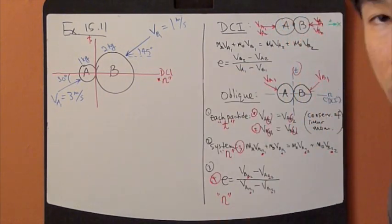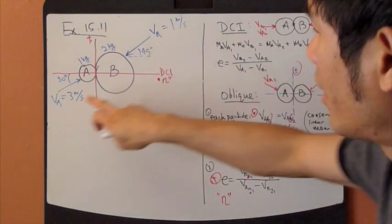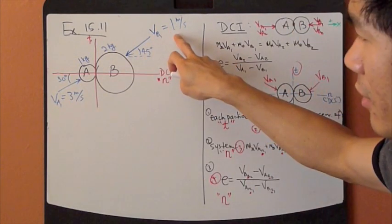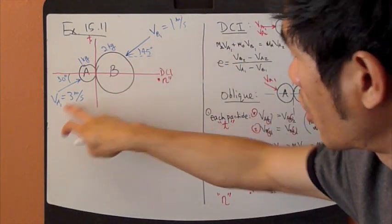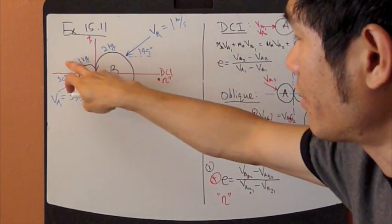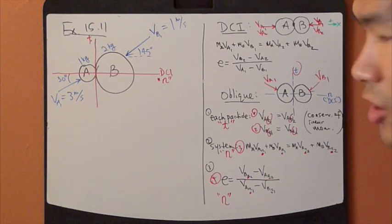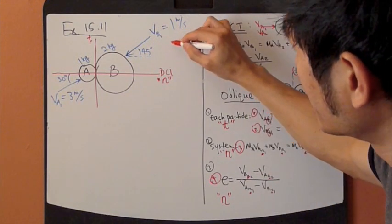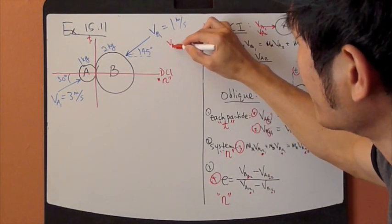So at a point of contact, you can draw this tangent line. And this is the normal N direction, which is the DCI direction. Velocities are given just before impact, VA1 and VB1. The mass is given for each particle.